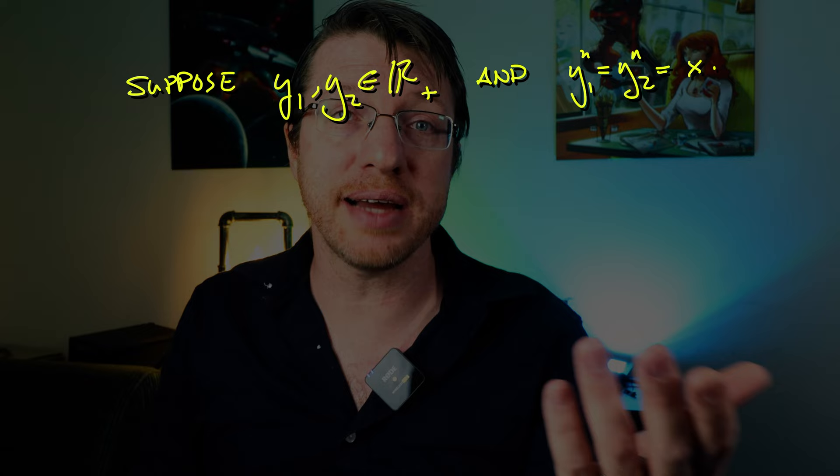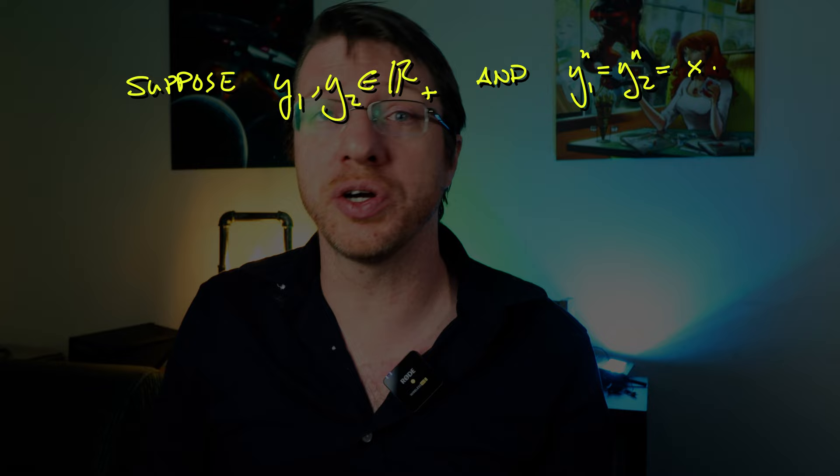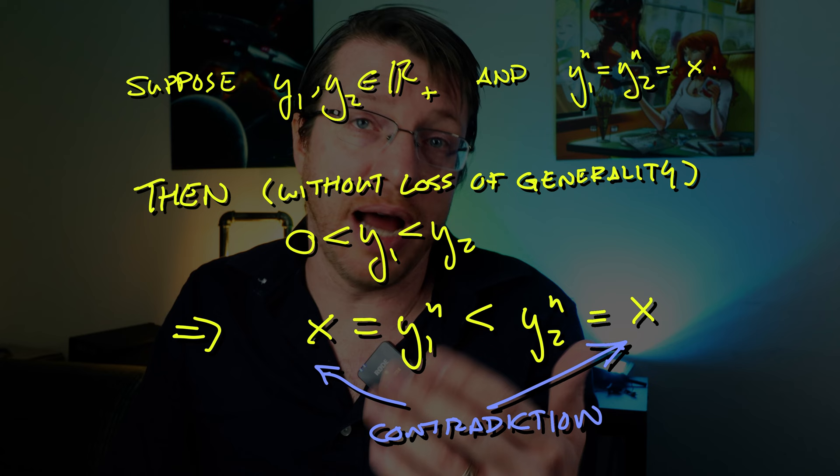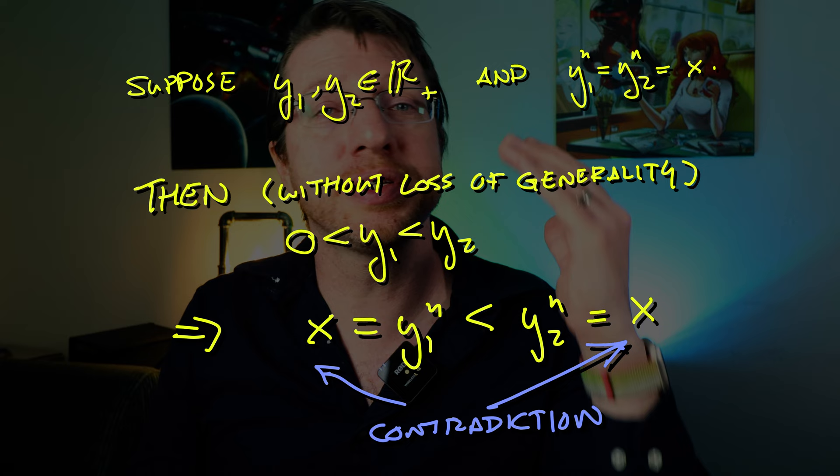How does this get us uniqueness? Well if we had two different positive reals, say y1 and y2, whose nth power was x, then by the definition of ordering either y1 and y2 are equal or one is larger than the other. Might as well take y1 as being less than y2. Now we just showed that their nth powers should not be equal but our assumption was that it should be. And this is a contradiction. So that means that there is at most one y, whose nth power is exactly x. Alright line two. I mean how long has this been already? We're only two lines in.